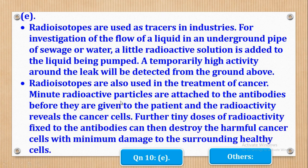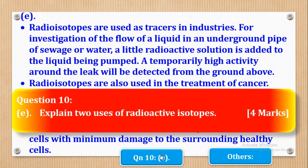Then two we shall say that radio isotopes are also used in the treatment of cancer. And the explanation is that minute radioactive isotopes are attached to the antibodies before they are given to the patient. And the radioactivity reveals the cancer cells. Further tiny doses of radioactivity fixed to the antibodies can then destroy the harmful cancer cells with minimum damage to the surrounding healthy cells. So basically those are the two explanations which they wanted.